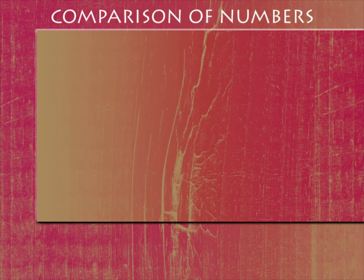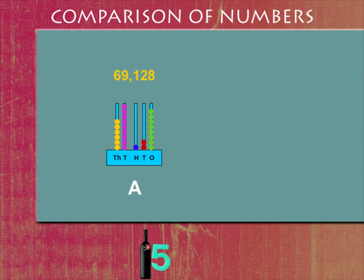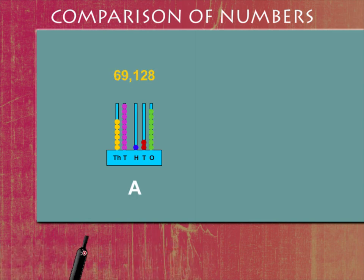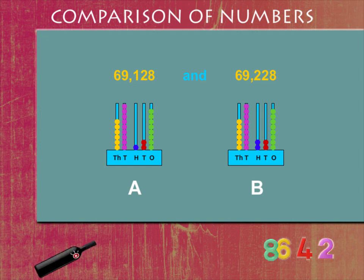Comparison of Numbers. Let's compare the numbers 69,128 and 69,228. On the abacus, these numbers are shown like this.